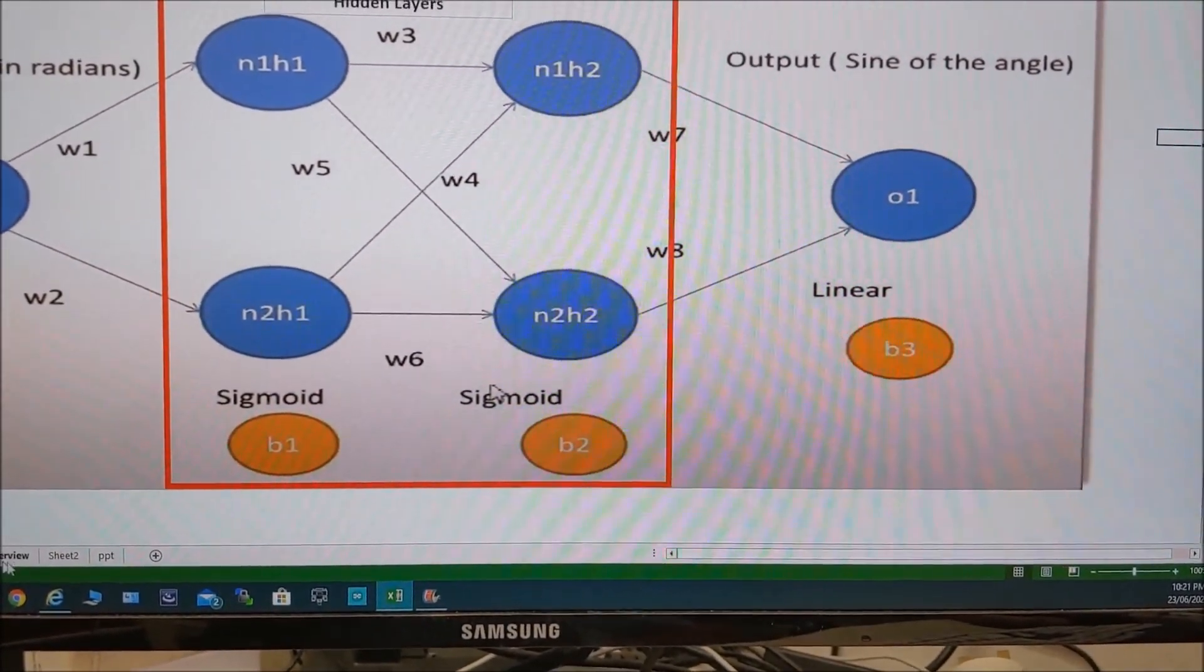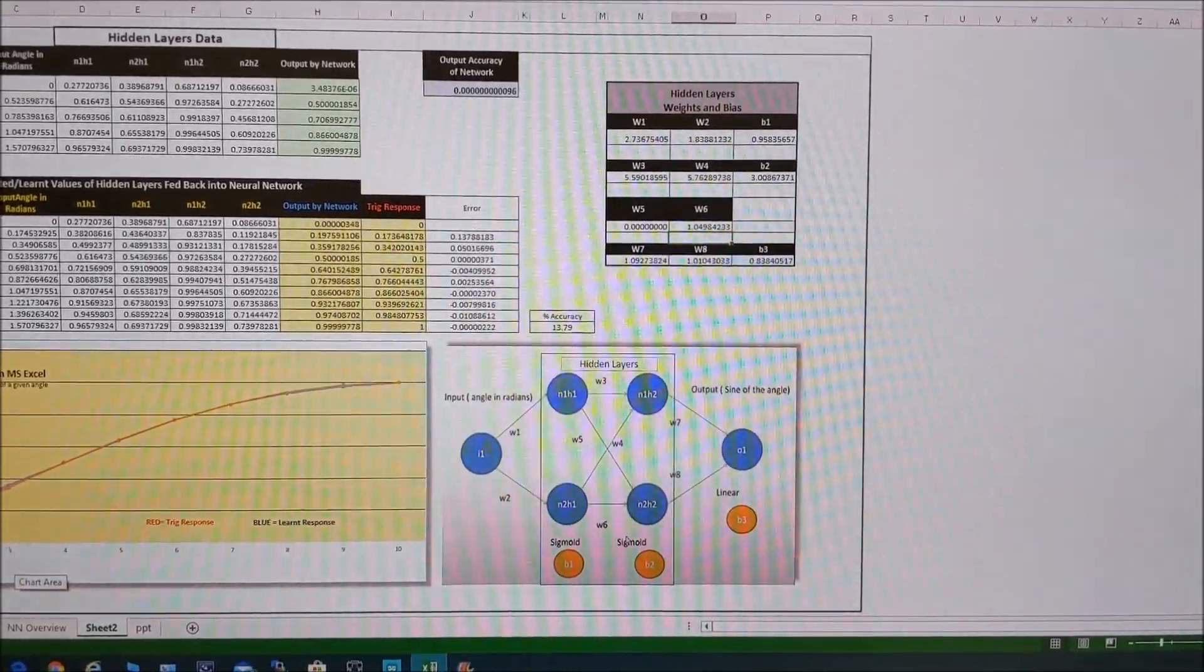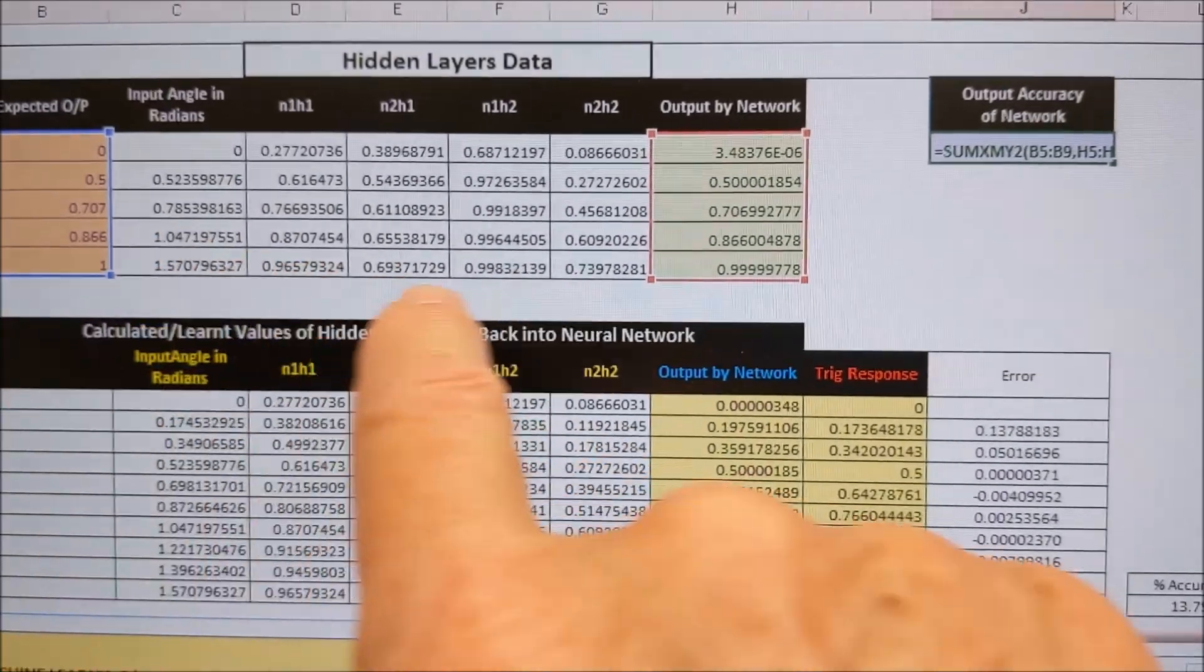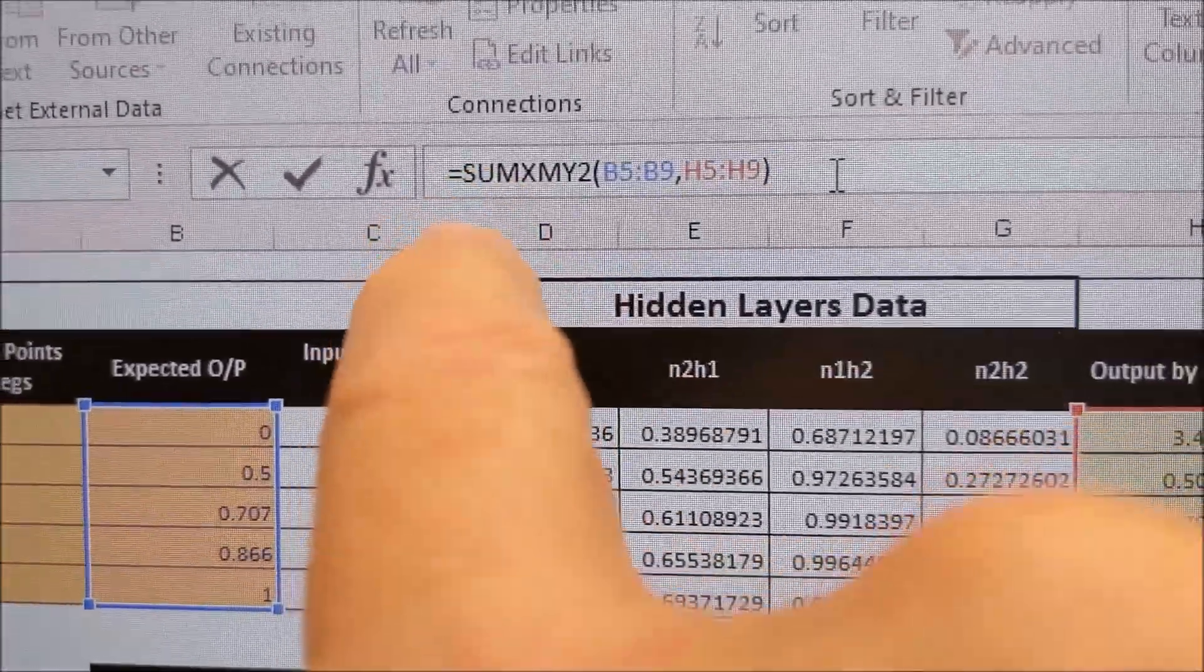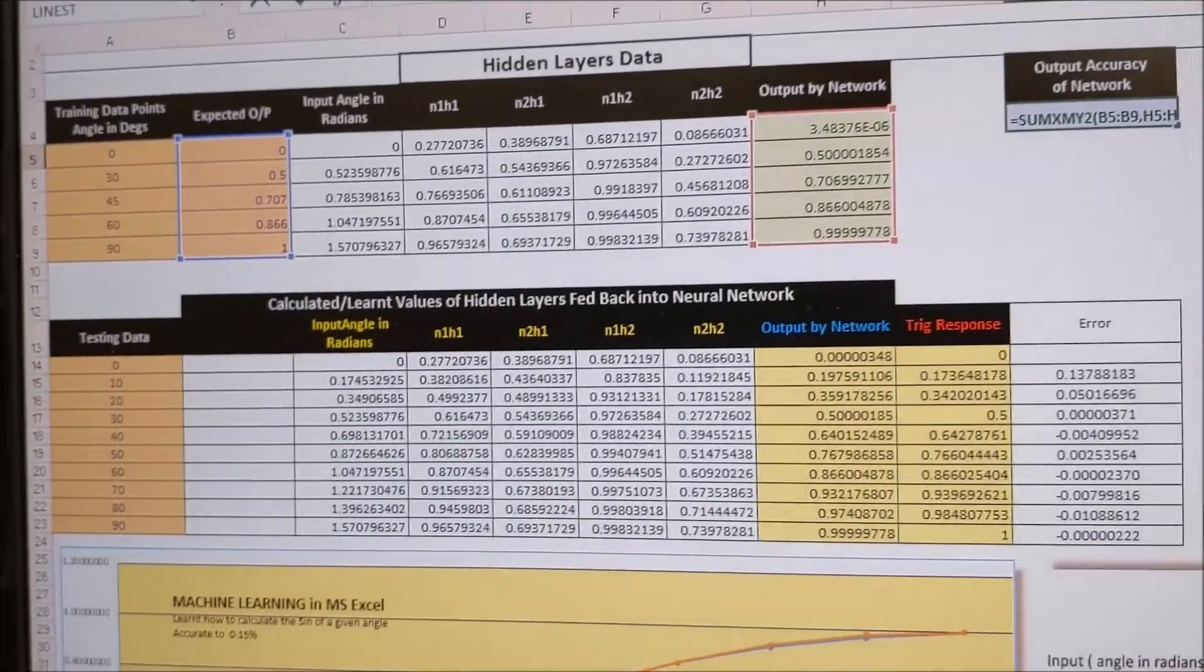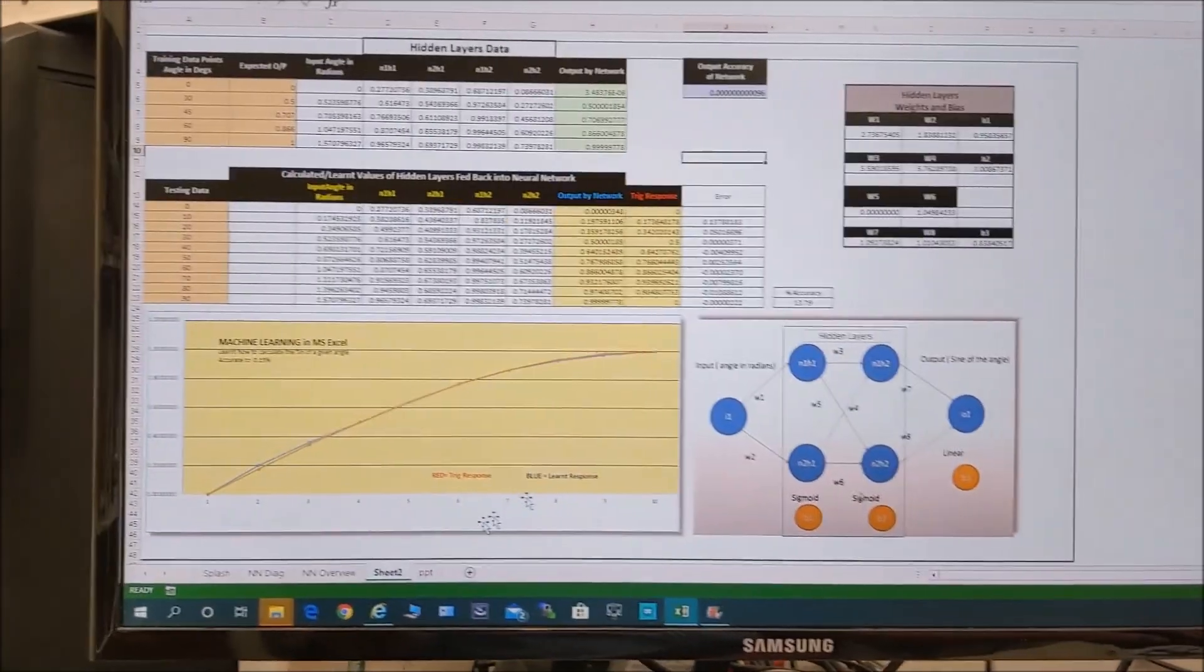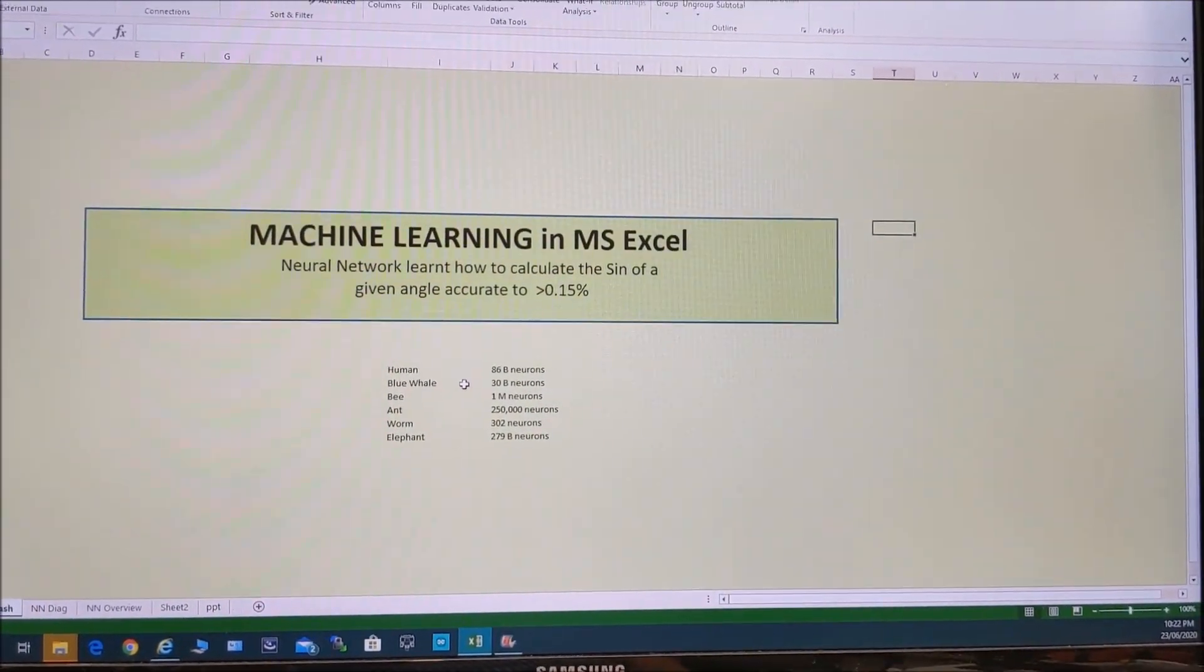And we then use the solver, data solver, to minimize the error. And the error, I've just gone into the formula there. I just realized I hadn't shown you that. Is the difference between the matrix sum. Yeah, actually, it's a good point. Sum matrix of those two fields. Matrices. And that squared. It gives you a rough idea of how to do machine learning in Microsoft Excel with two neurons.